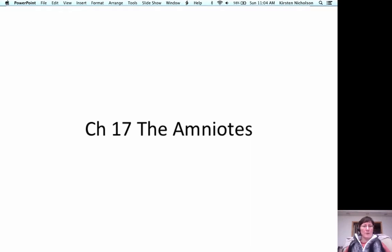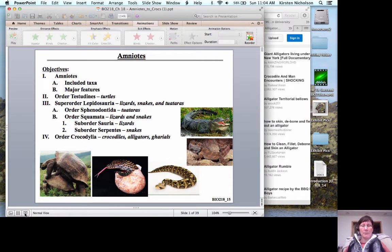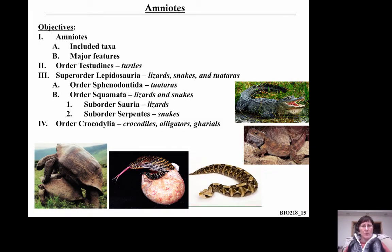We are now going to start talking about the next group in our lineup, the amniotes. We're going to cover the included taxa in the group, the Amniota. We'll talk about the major features that all of the amniotes have, and then we'll begin to talk about the unique features that each of the clades or major groups within the amniotes possess.